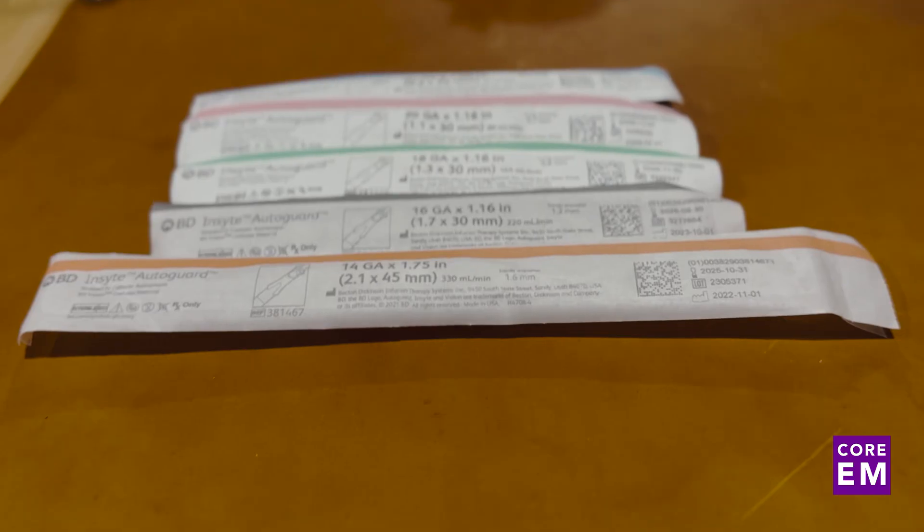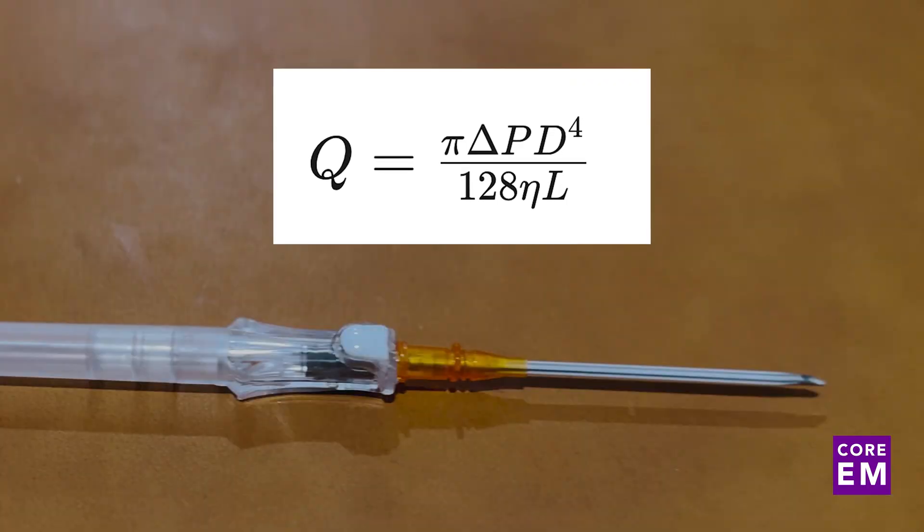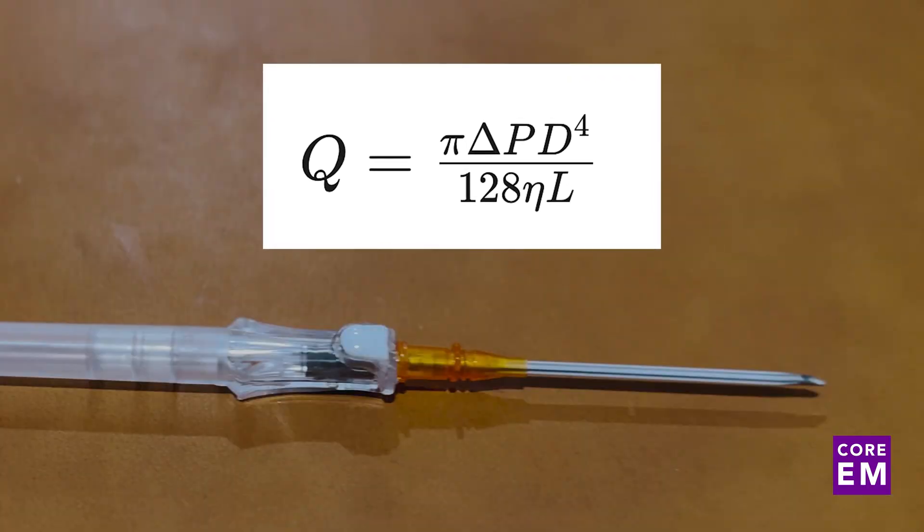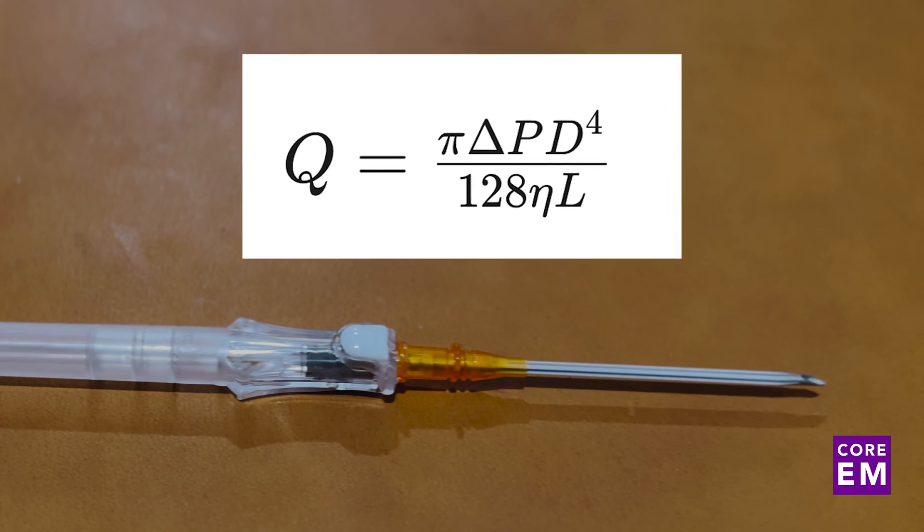When you want to resuscitate somebody and do it quickly, whether that's with blood or with fluids, this is the formula that runs through your mind. And the variables that matter in our calculus are going to be the catheter diameter and length.